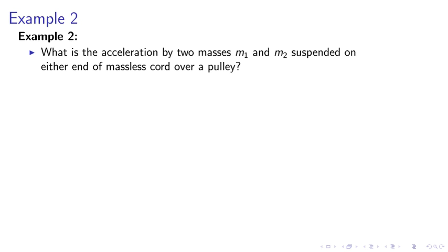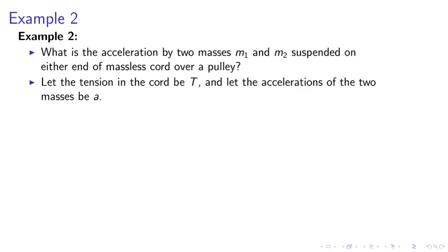Example 2. What is the acceleration by two masses, M1 and M2, suspended on either end of a massless cord over a pulley? Let the tension in the cord be T and let the accelerations of the two masses be A.